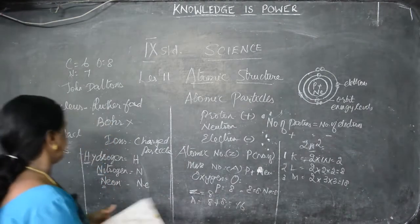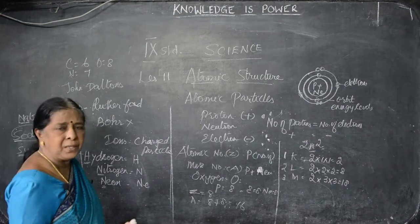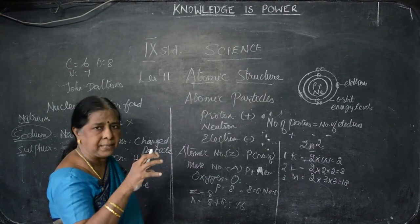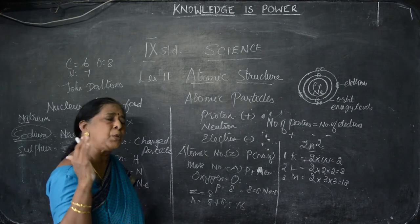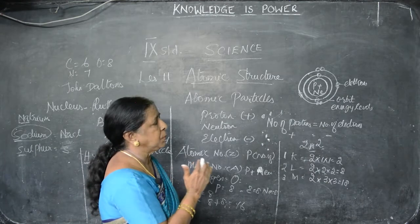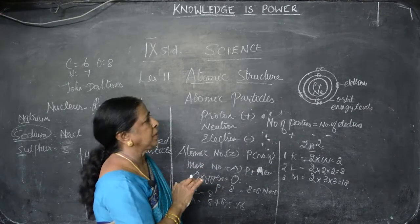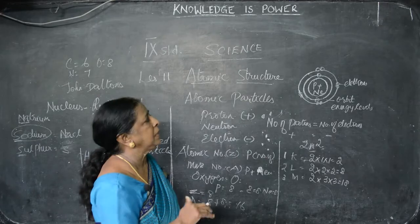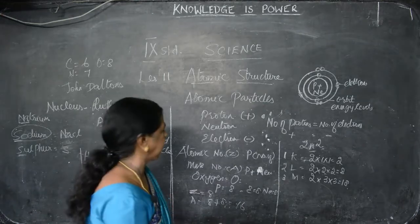Next, we have to go for electronic configuration. Is it clear so far, children? We know proton is positively charged, neutron has no charge, and electron is negatively charged. In the nucleus, proton and neutron are present. What you are learning now will remain the same even through higher education. Nucleus is positively charged because of the proton. Around the nucleus there are orbits with electrons; orbits are otherwise known as energy levels. To arrange the number of electrons, there is the formula 2n².